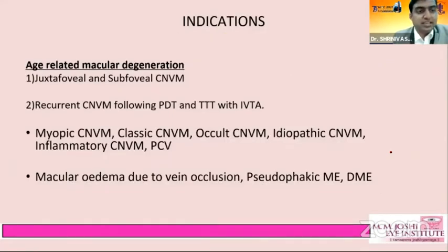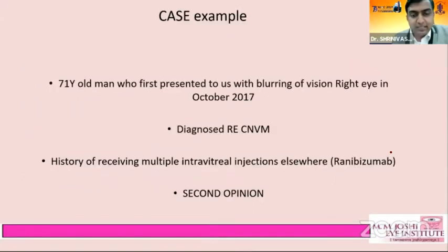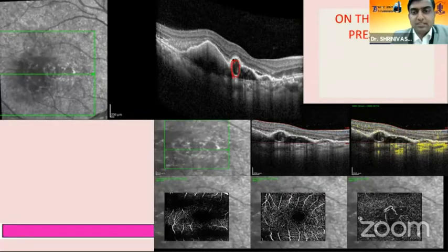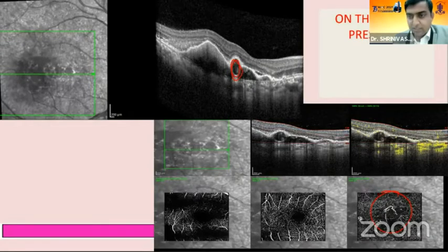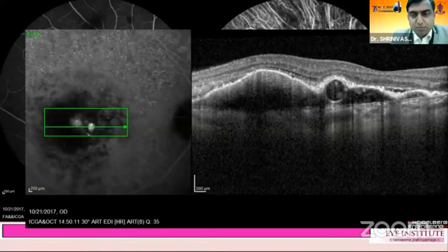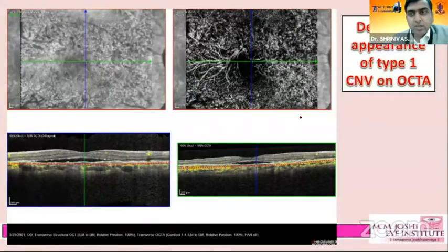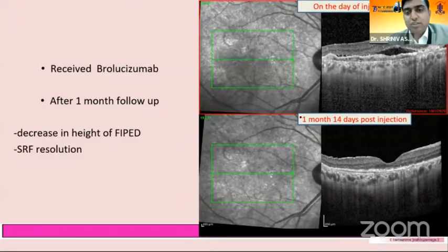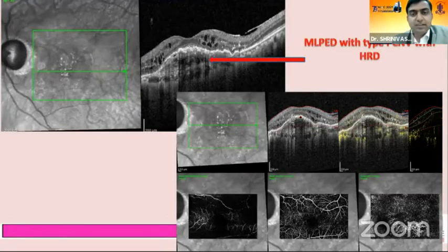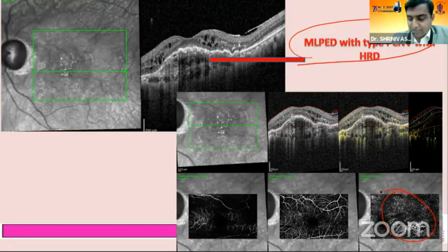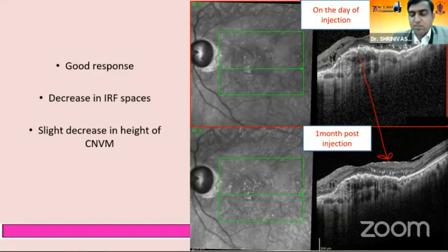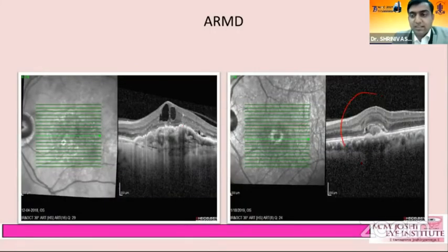Indications for intravitreal injections include any form of CNVM, age-related macular degeneration, myopic CNVM, classic CNVM, macular edema due to vein occlusion, and pseudophakic CME. For a case with polyp visible on OCT with OCTA showing a neomuscular pattern — FFA and ICGA confirmed the polyp, and OCTA showed dead-tree appearance on type 1 CNVM. These cases do well with Aflibercept or Brolucizumab rather than Ranibizumab. Occult CNVM and PCVs are good cases for these two injections. Classic CNVM responds well to Ranibizumab.